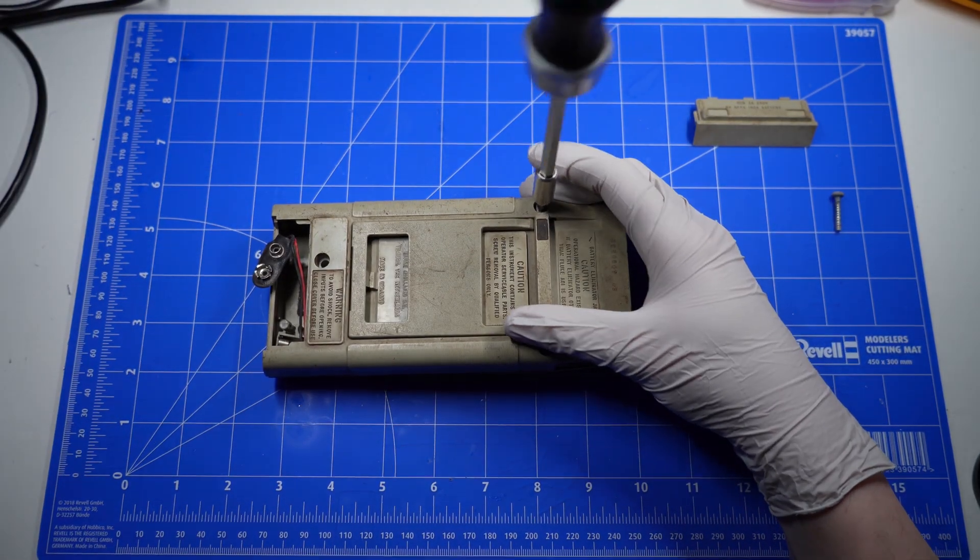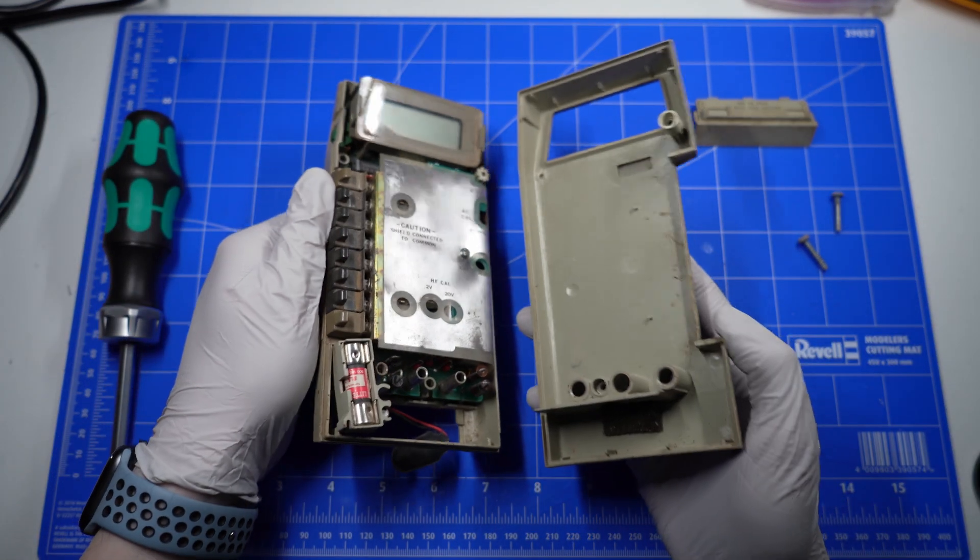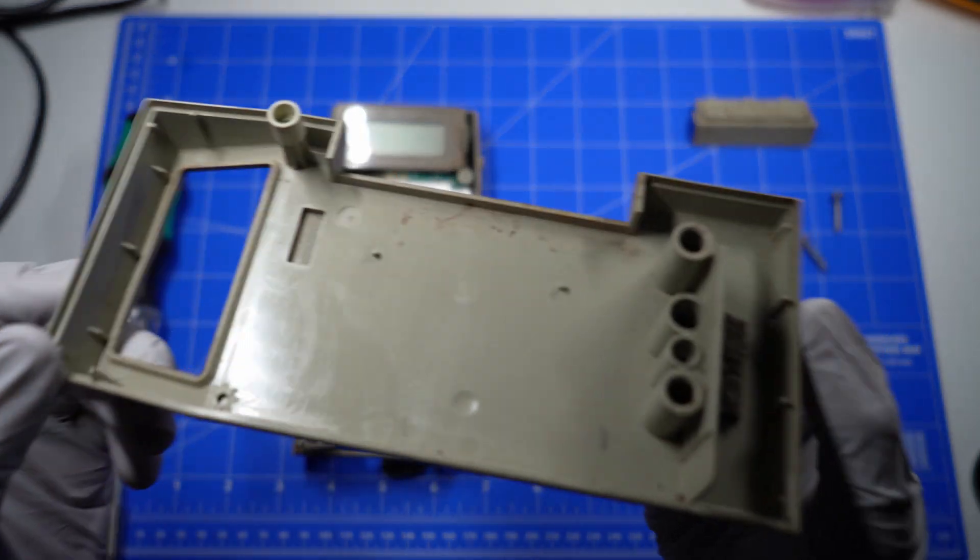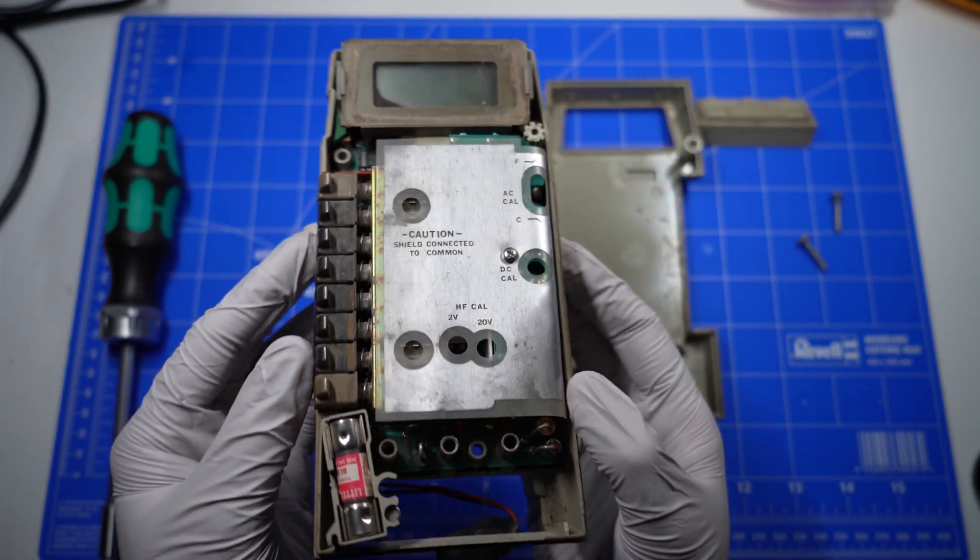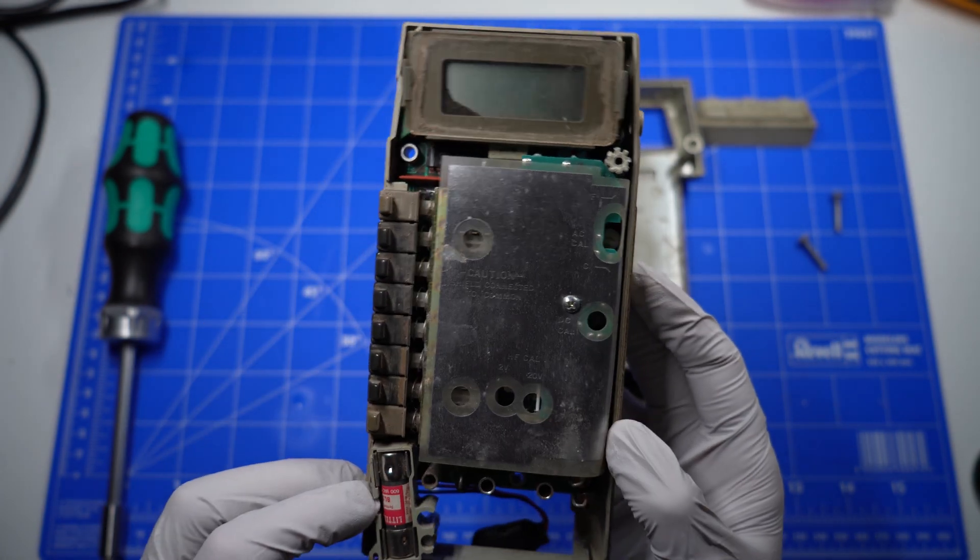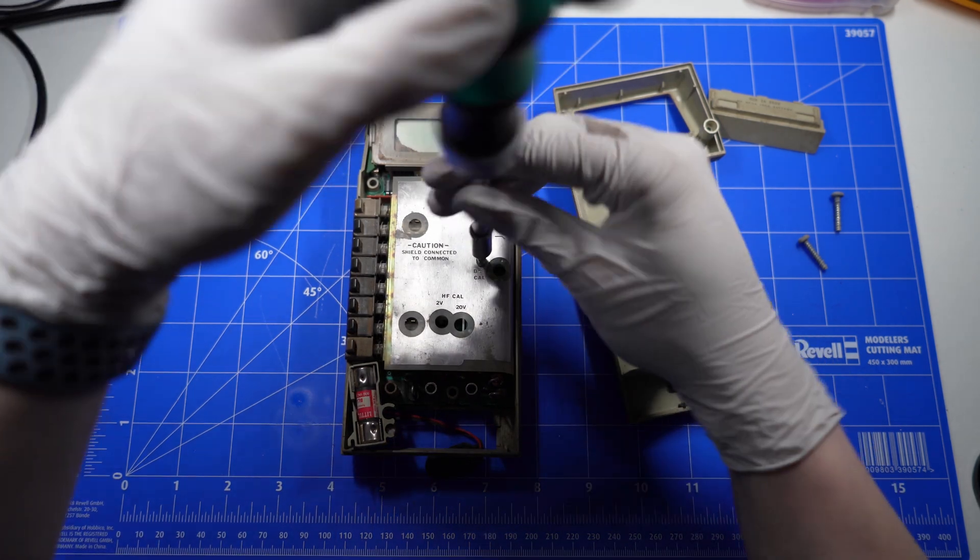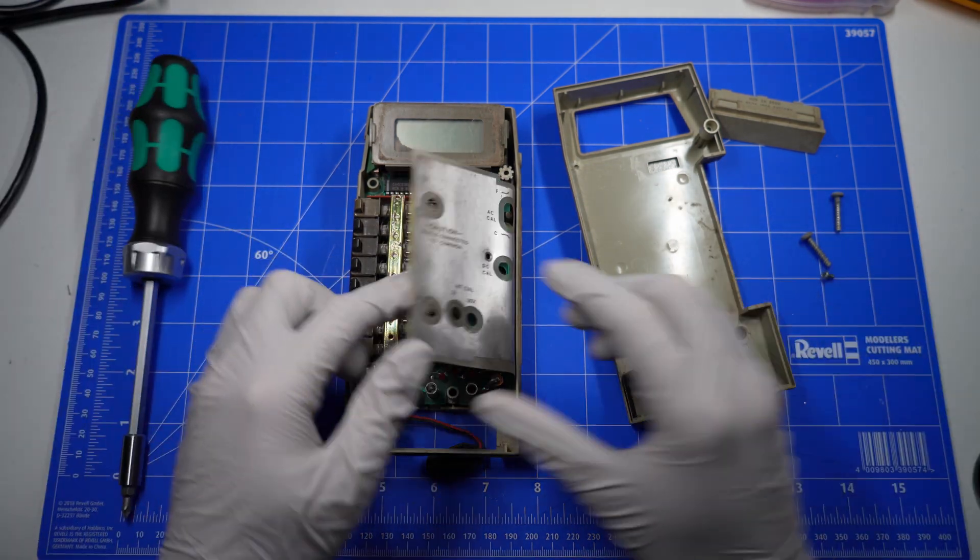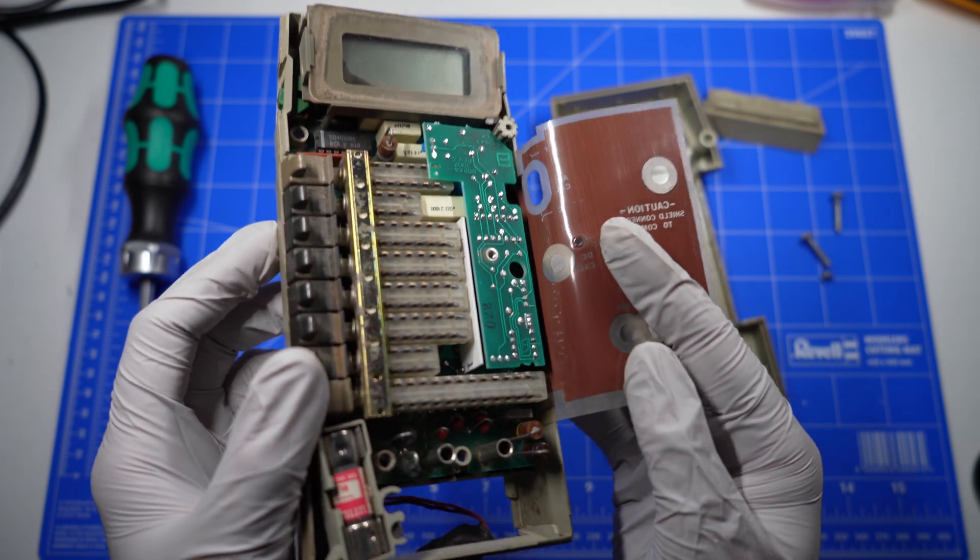Going to get the rest of these screws off. Popping open the case and more dust. Tons and tons of dust everywhere. Just going to remove this shield and have a look underneath. And yeah, just more dust but no corrosion.